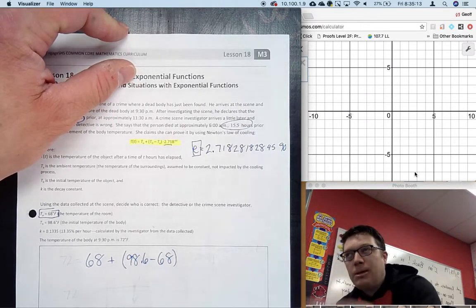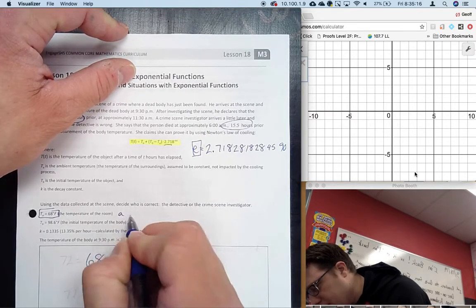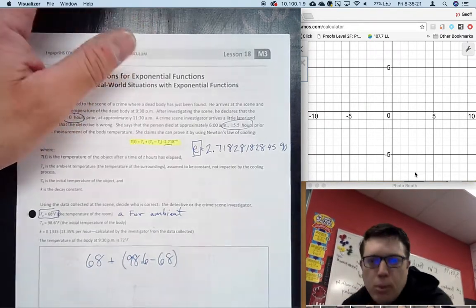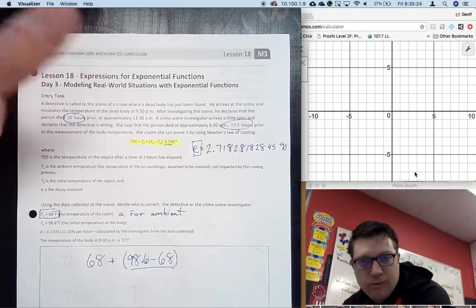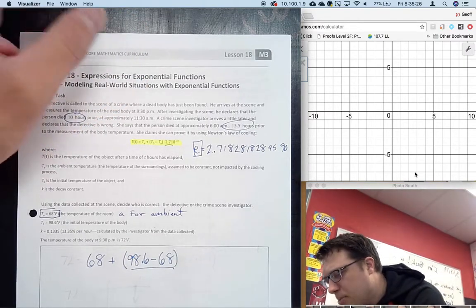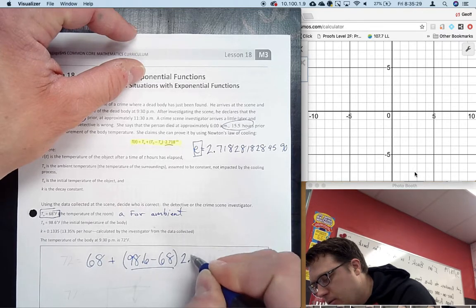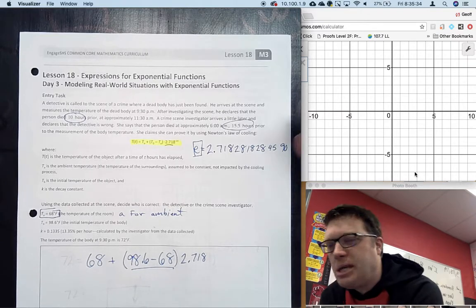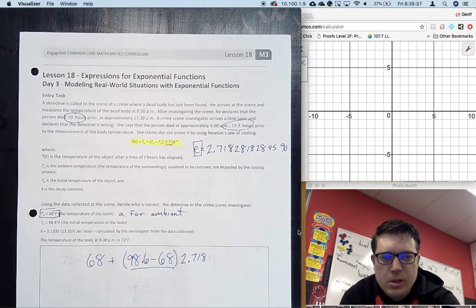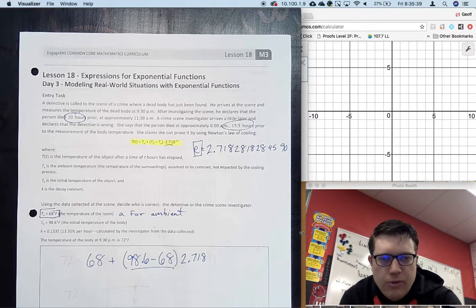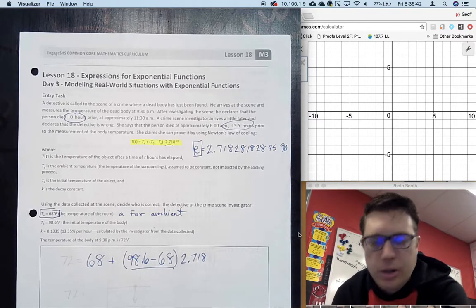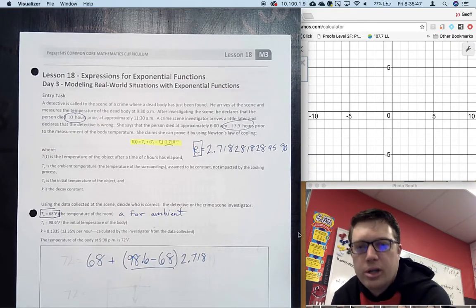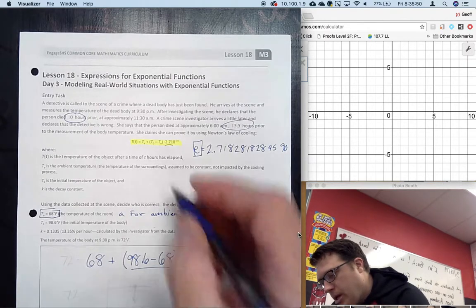We're going to subtract by the ambient temperature of the room. This is like an initial value. Now we're going to multiply by 2.718. I would just transfer that to e, but when you're a forensic investigator, you're going to rely on the decimals and not even care that it's e. Someone just told you the formula and you're going to use it.